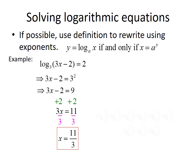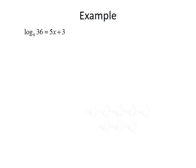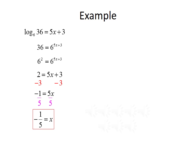Let's look at another example: solve log base 6 of 36 equals 5x plus 3. Using the definition, we rewrite as 36 equals 6 raised to the 5x plus 3 power. We rewrite 36 as 6 squared, giving 6 squared equals 6 to the 5x plus 3. Setting exponents equal: 2 equals 5x plus 3. Subtracting 3 gives negative 1 equals 5x, then dividing by 5 gives x equals negative 1 fifth.